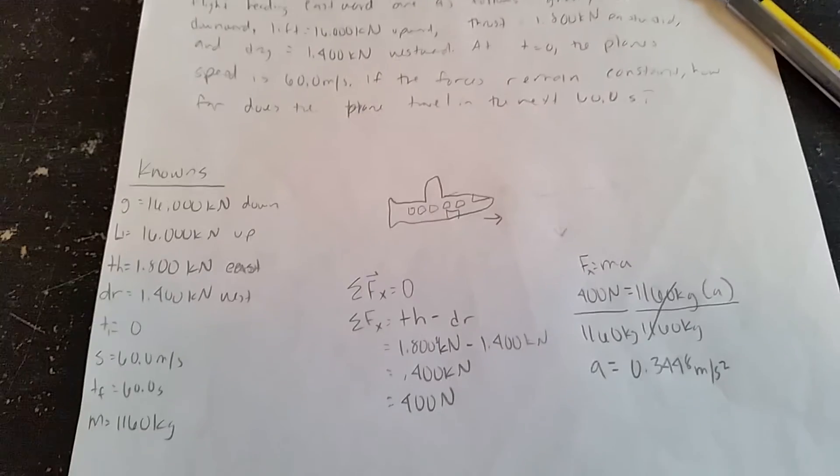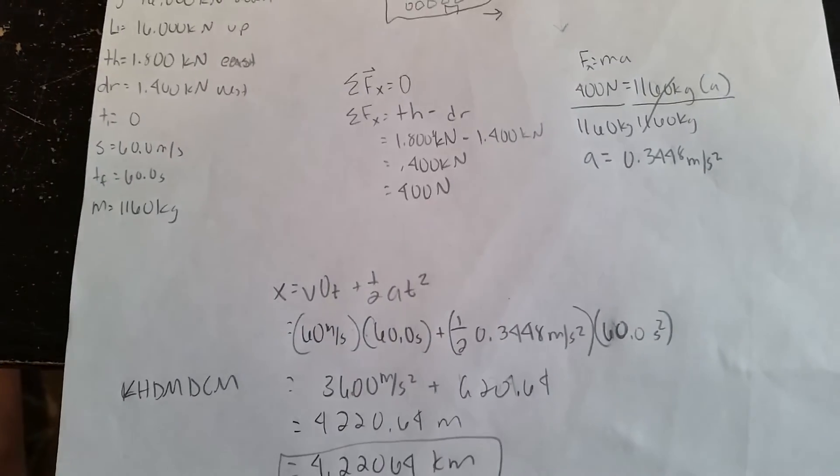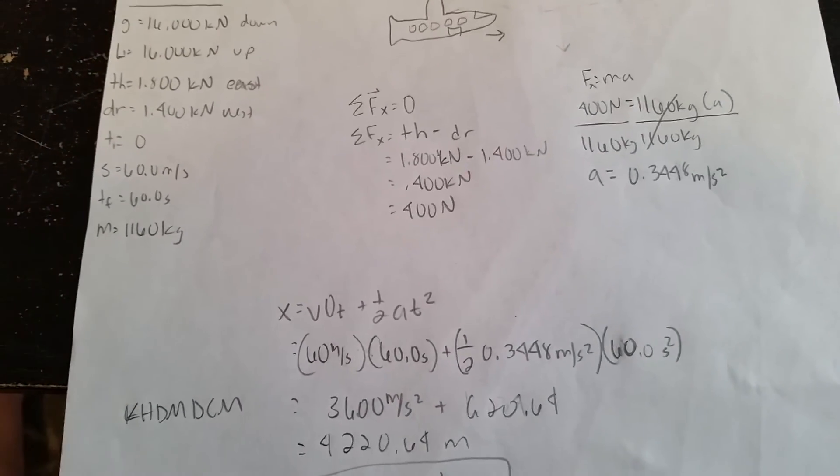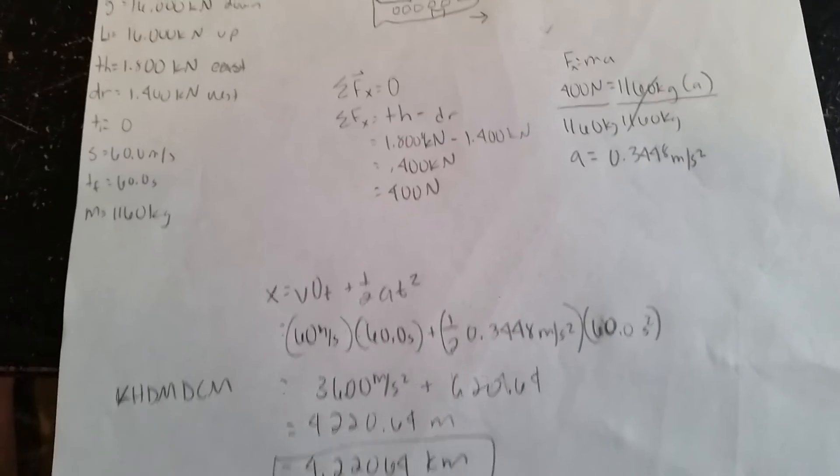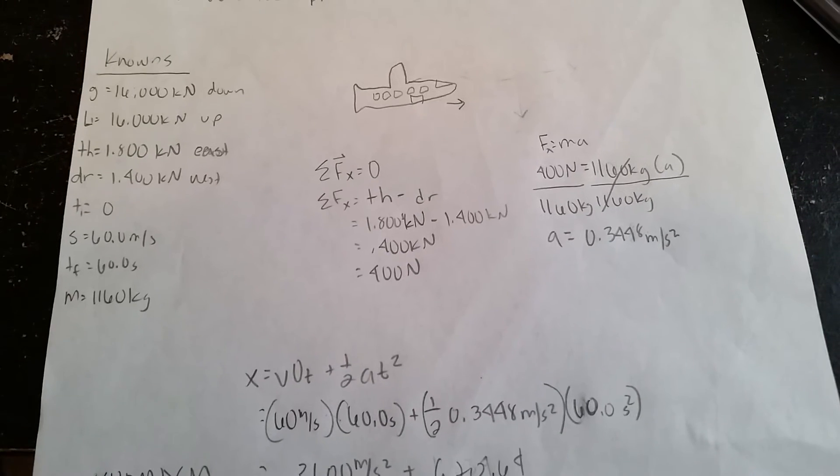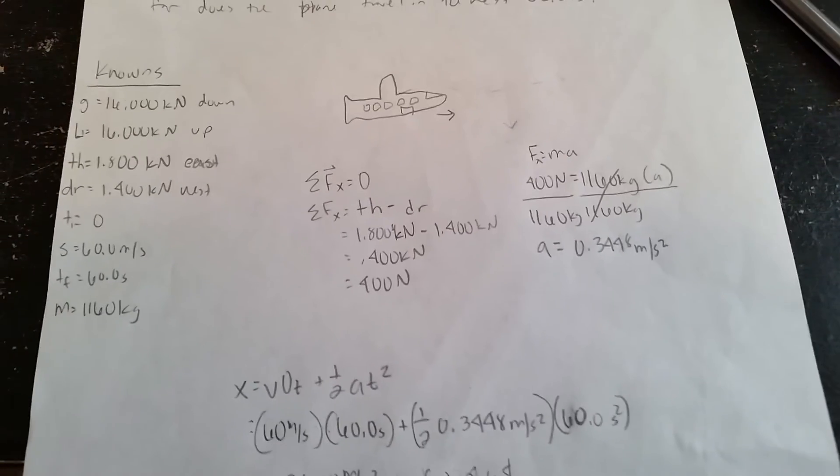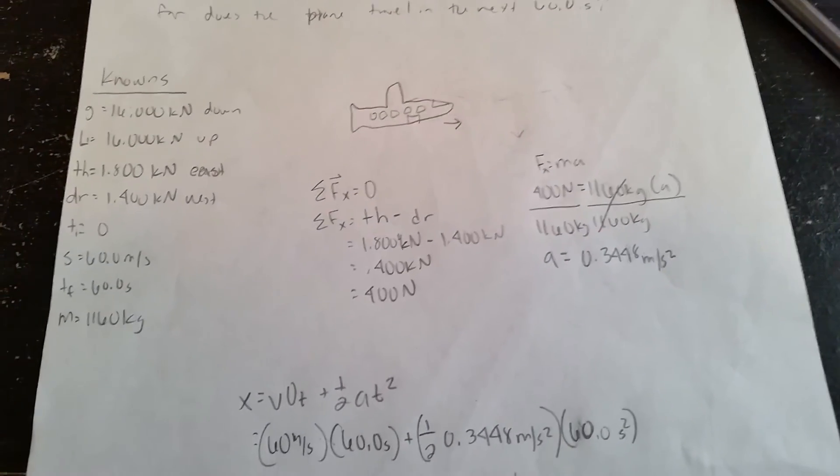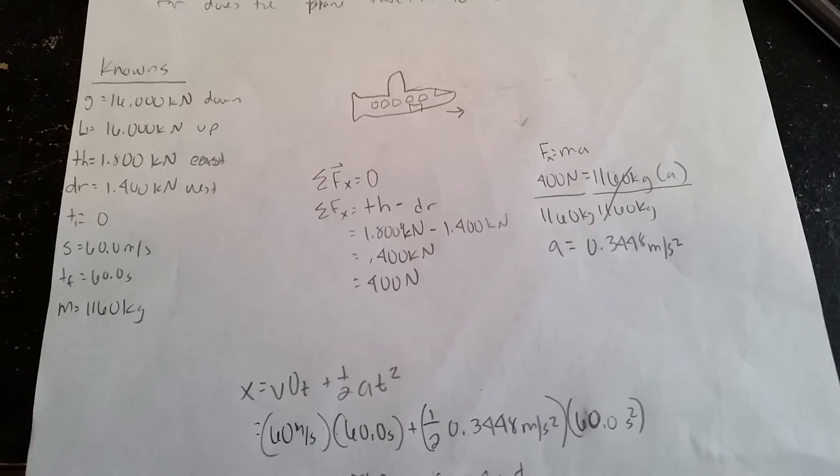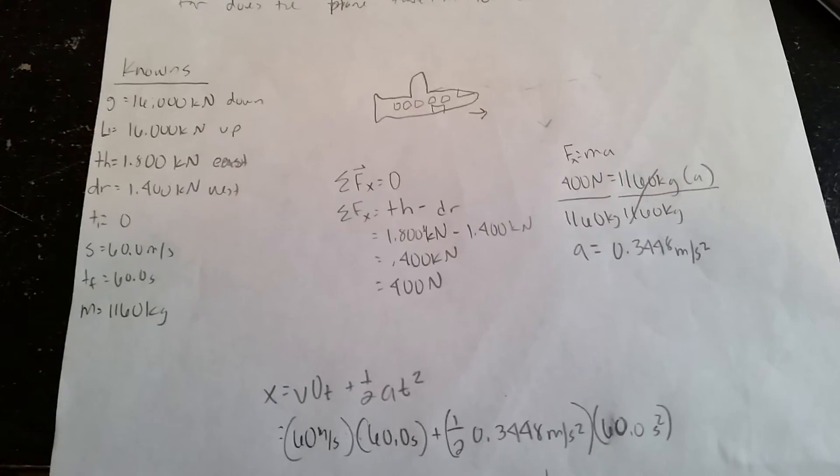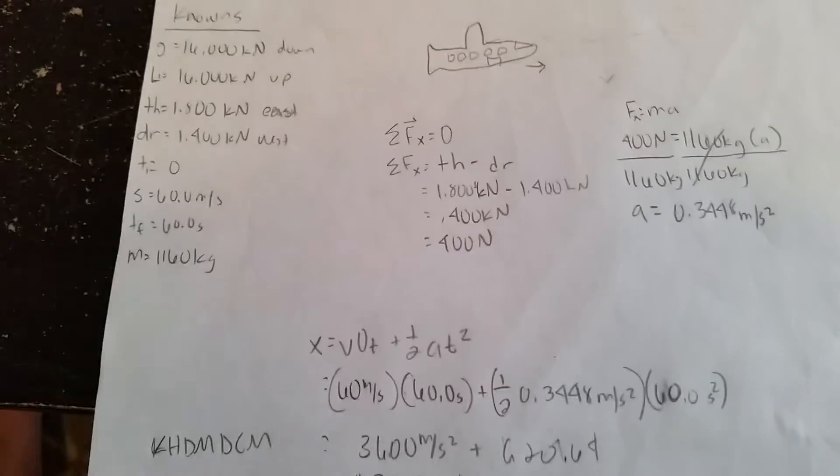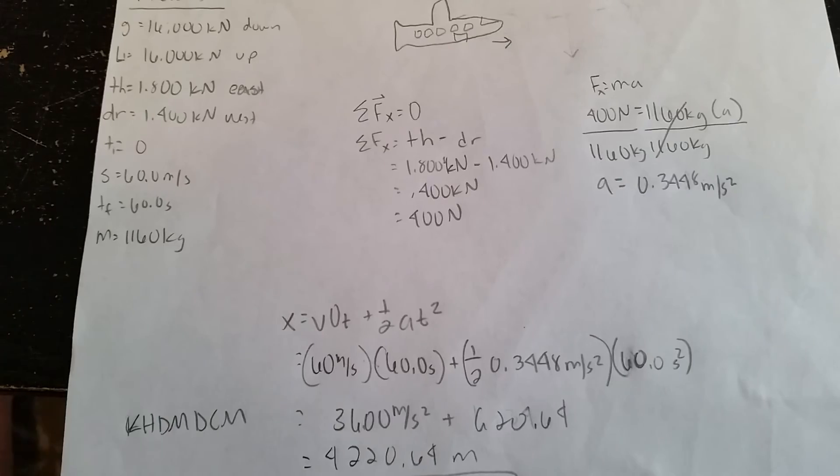So with these values right here, I'm able to use the formula x equals v₀t plus half of acceleration times time squared. So I plug in for my velocity 60 meters per second times the time, which is 60 seconds, plus one half times the acceleration that I found earlier up top right here, the 0.3448 meters per second squared, times the time, which is 60 seconds squared. Well, 60 seconds and I'm squaring that whole one half a t squared.